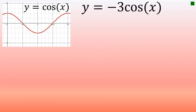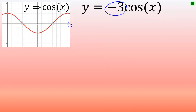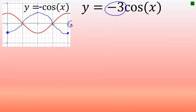For the final example, we'll graph y equals negative three cosine of x. This is the only example with a negative value for a. Like all functions with a negative coefficient, it results in a rotation around the x-axis — essentially flipping the graph upside down. Instead of beginning above the x-axis, the graph begins below it. Instead of falling to its low point halfway through, it rises to its highest point halfway through one cycle.